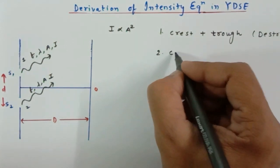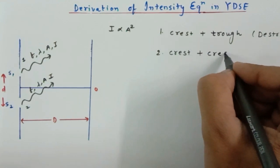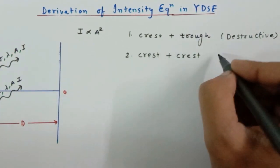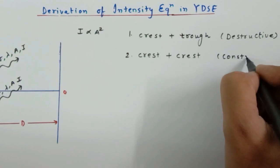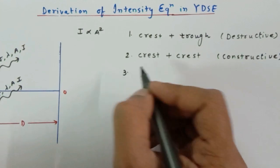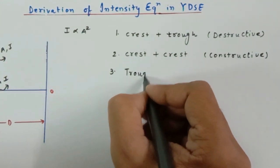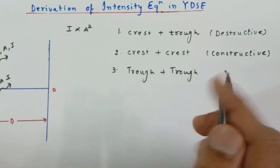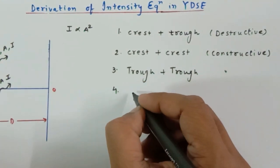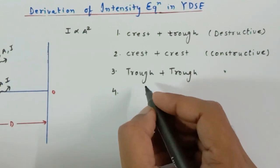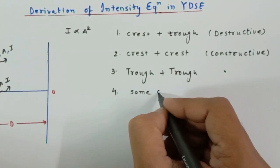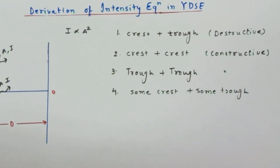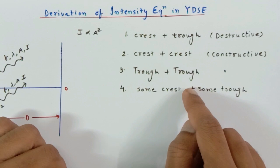The second possibility is crest may fall on crest. This is called constructive interference, where the amplitudes get added up. If the trough falls on trough, that is also constructive interference. There is a fourth possibility: some part of the crest may fall on some part of the trough, and this part is going to give us our intensity equation.